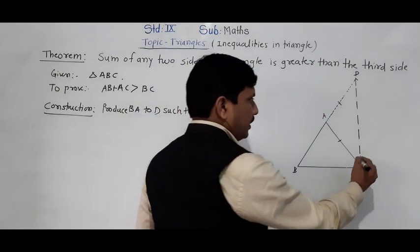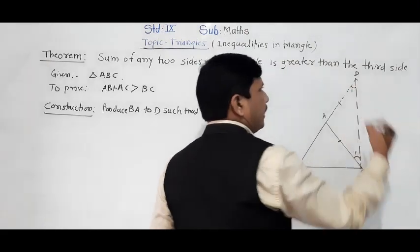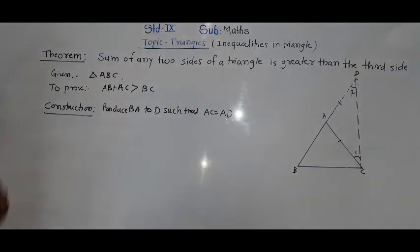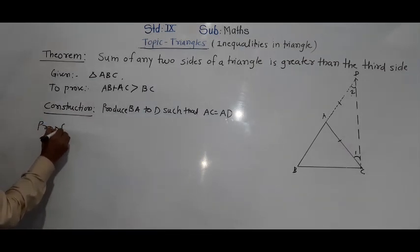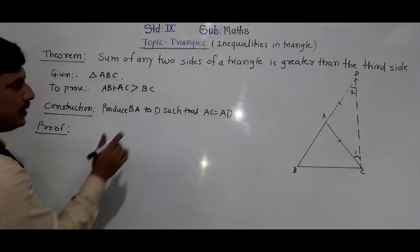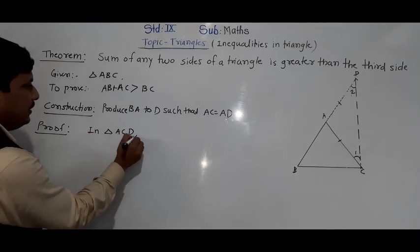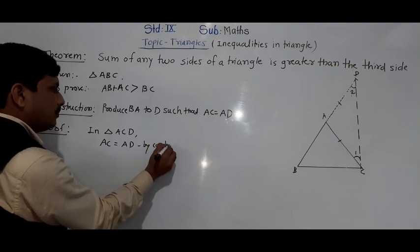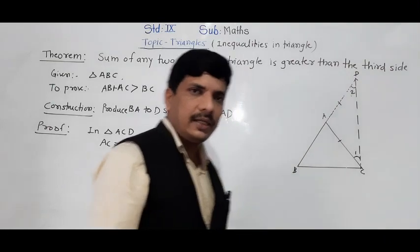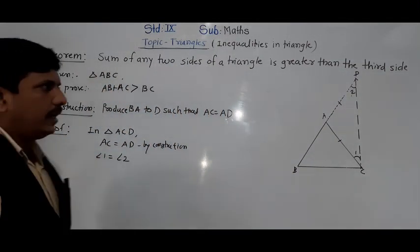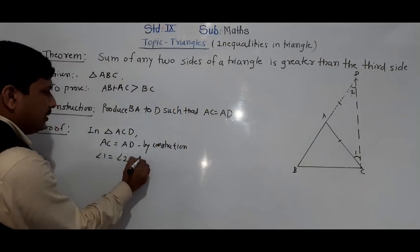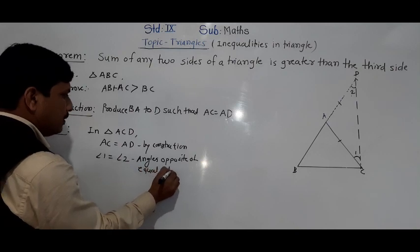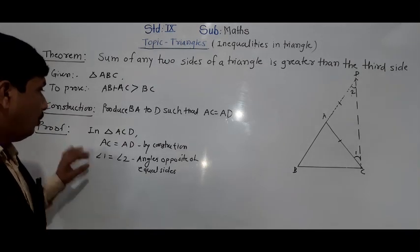Here angle 1 and angle 2 — since AD and AC are equal, the angles opposite equal sides are always equal. So in the proof, in triangle ACD, AC is equal to AD by construction. So we can say angle 1 is equal to angle 2, because angles opposite equal sides are equal.